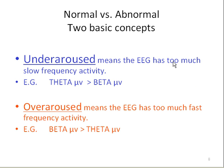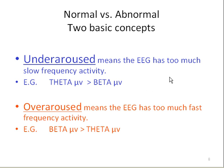Two concepts that are often used to determine normal and abnormal are under-aroused and over-aroused. Under-aroused means that the EEG shows a pattern of too much slowing — that is, theta is greater than beta. Over-aroused is just the opposite; the EEG has a pattern of fast wave activity where beta is greater than theta.